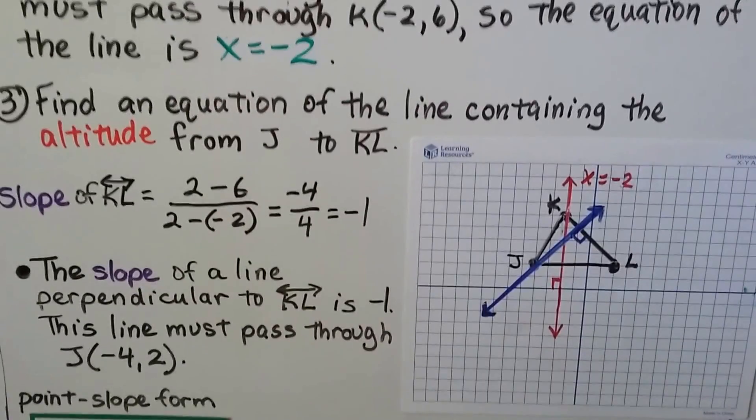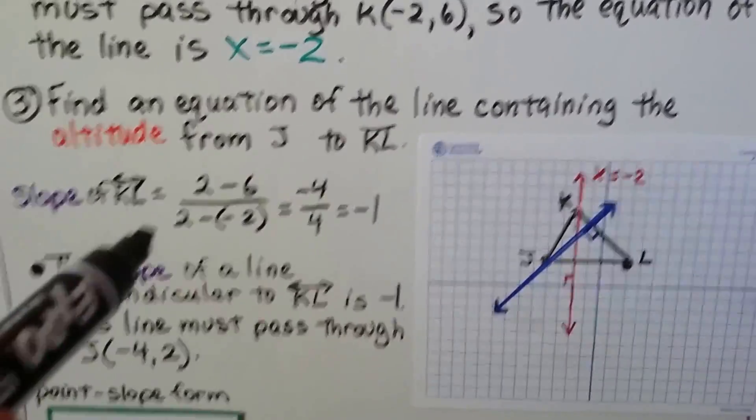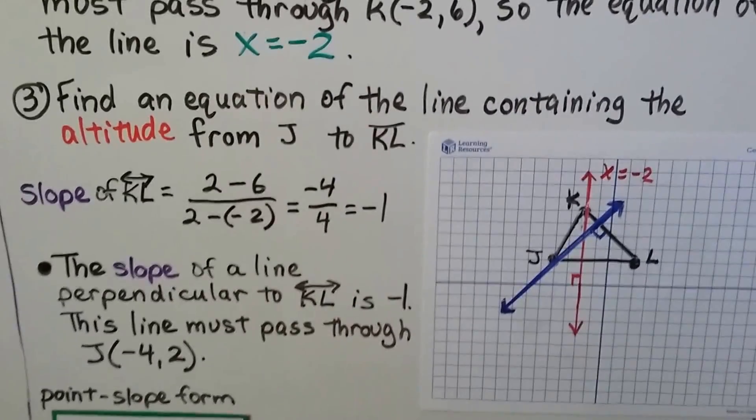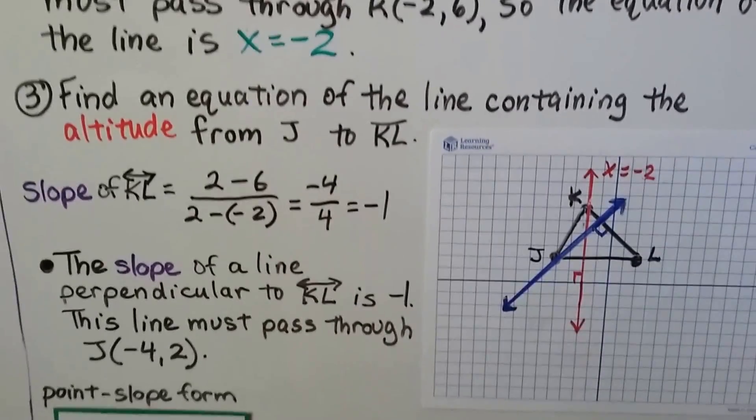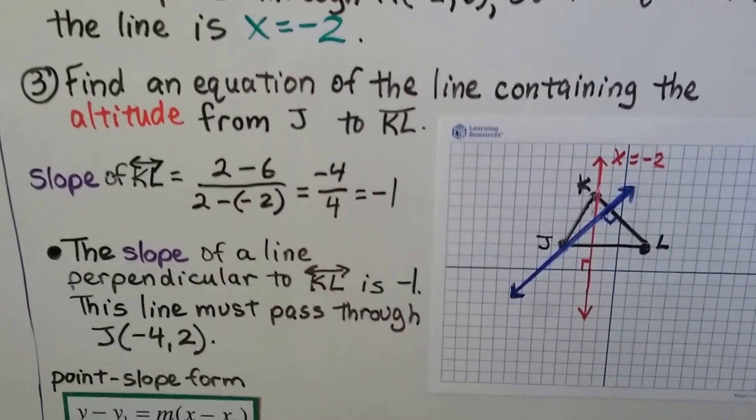The slope of line KL is, using the slope formula, 2 minus 6 over 2 minus a negative 2. And 2 minus 6 is a negative 4. And 2 minus a negative 2, well, we're subtracting a negative, so we add the opposite, so we get a positive 4. When we simplify it, we get a negative 1.